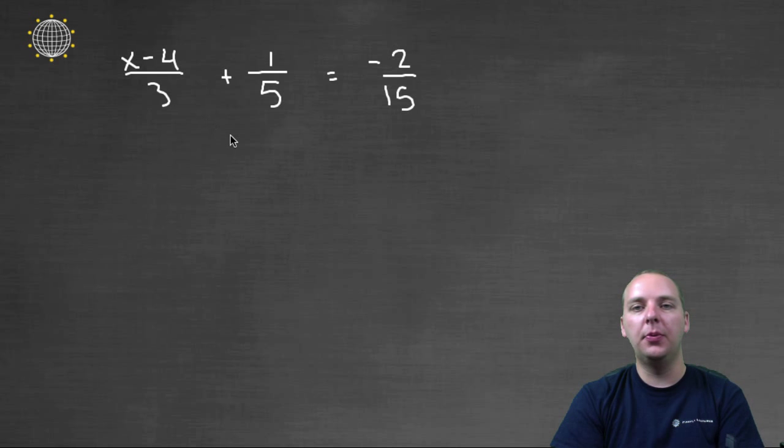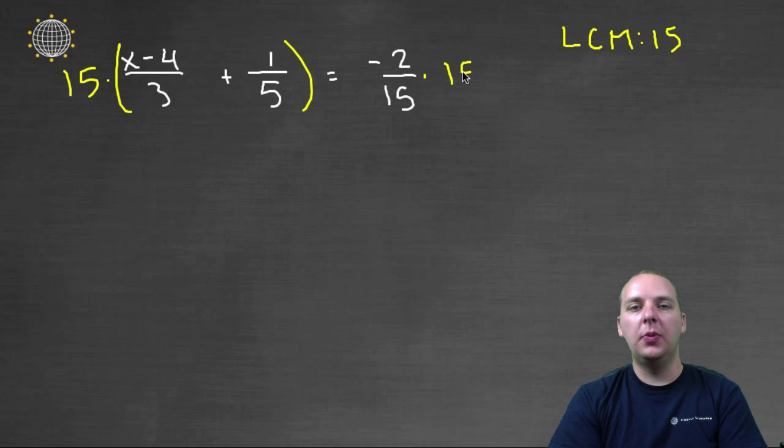So here I've copied the same example down, and earlier we found that the LCM was fifteen for this problem, and so we're going to multiply the left side of the equation by the LCM, fifteen, and the right side of the equation.